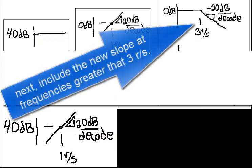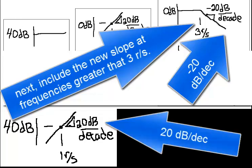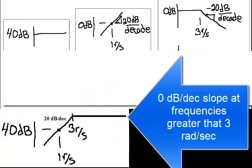Next, include the new slope at frequencies greater than 3 radians per second. Negative 20 and positive 20 gives 0 dB per decade slope at frequencies greater than 3 radians per second.